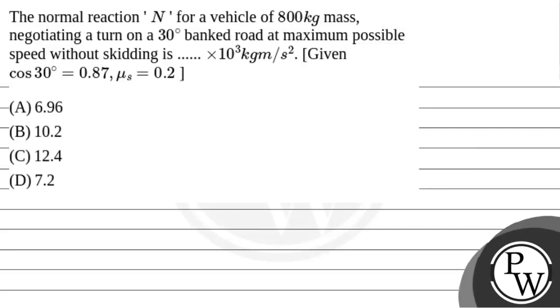Hello, let's read out the question first. The normal reaction N for a vehicle of 800 kg mass negotiating a turn on a 30 degree banked road at maximum possible speed without skidding is blank times 10 to the power 3 kg meter per second square. Given that cosine of 30 degrees is 0.87 and mu s, the coefficient of static friction, is 0.2.